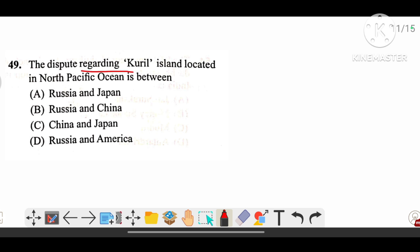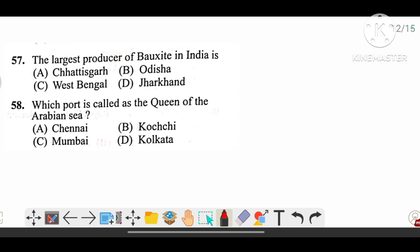The dispute regarding Kuril island located in the north Pacific Ocean is between which countries. The answer is A, that is Russia and Japan. The largest producer of bauxite in India is B, that is Odisha.